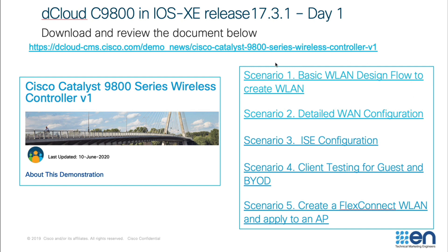Our sessions are divided into five different sections or scenarios. The first scenario is basic WLAN design — how to create a WLAN and set up different LAN parameters. Then we go into detailed WLAN configuration with advanced parameters. Scenario three is how to set up ISE for authentication and authorization in a wireless network. Then we talk about client testing for Guest and BYOD — bring your own device. And lastly, scenario five covers how to connect and set up FlexConnect APs in a remote network.